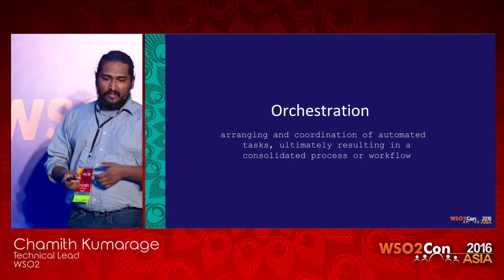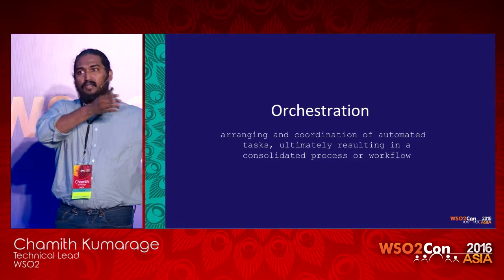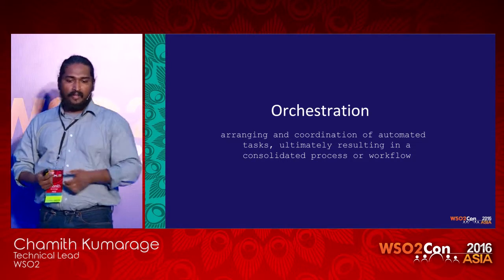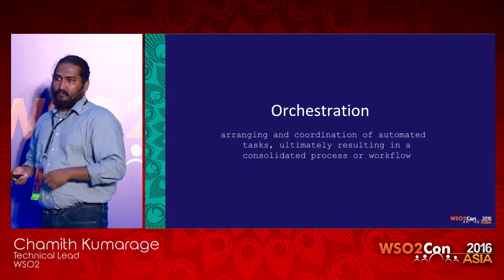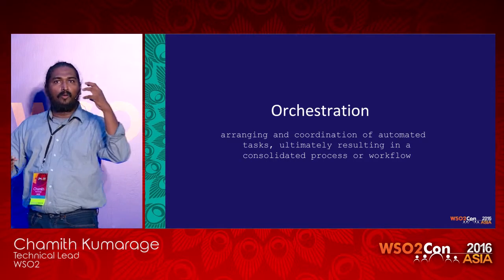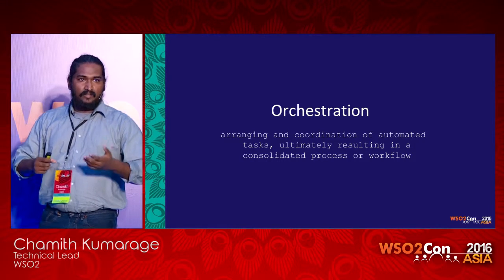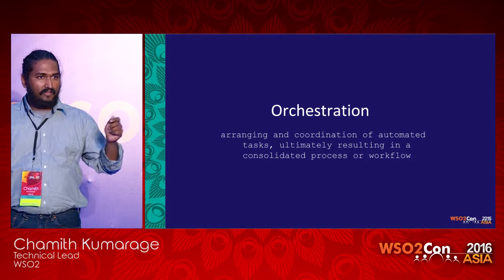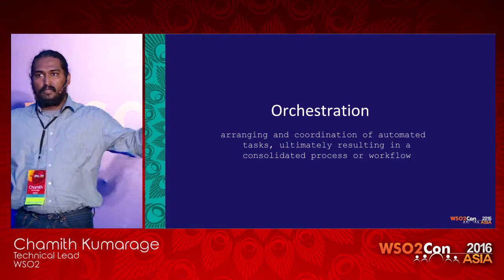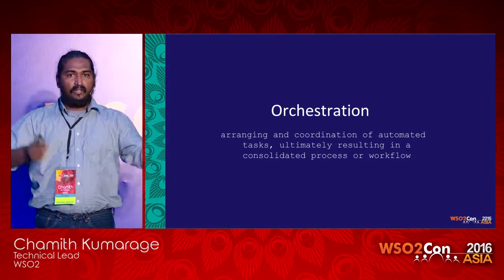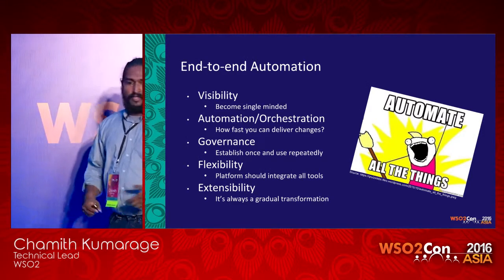Orchestration means arranging and coordination of automated tasks. You cannot have orchestration without automation — those two go together, ultimately resulting in a consolidated process or workflow. Once you have automated a bunch of tasks, you combine those together and create a workflow or a process and manage it. That is orchestration — the same thing that happens in a real orchestra, where the conductor knows the duty and role of each component and controls the whole.